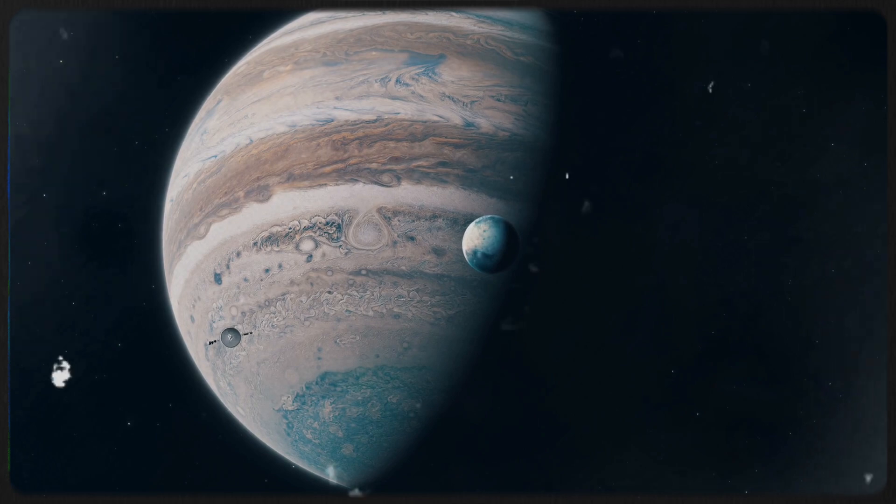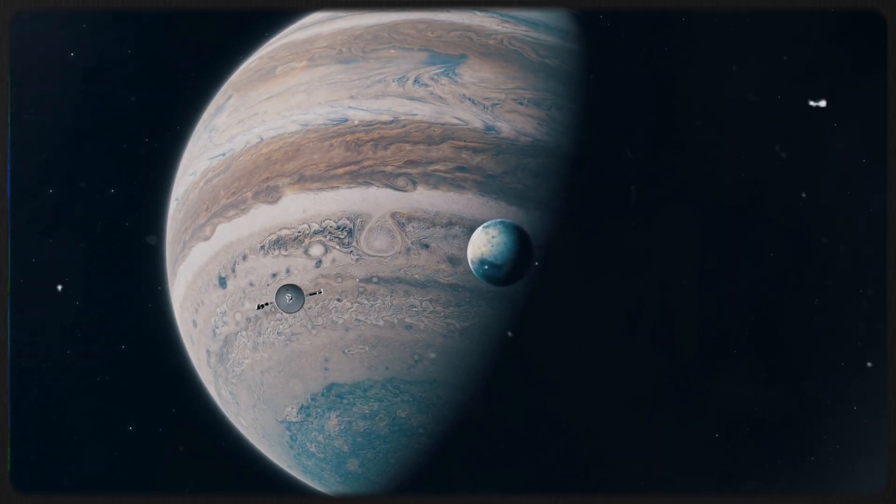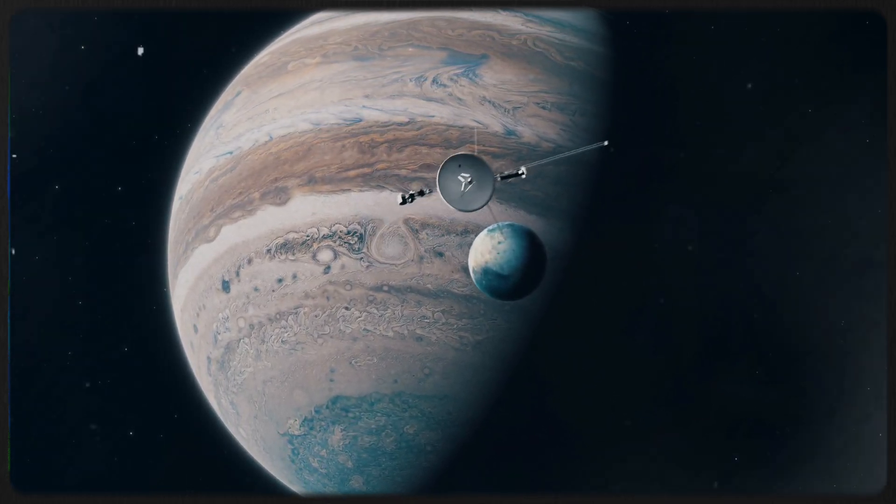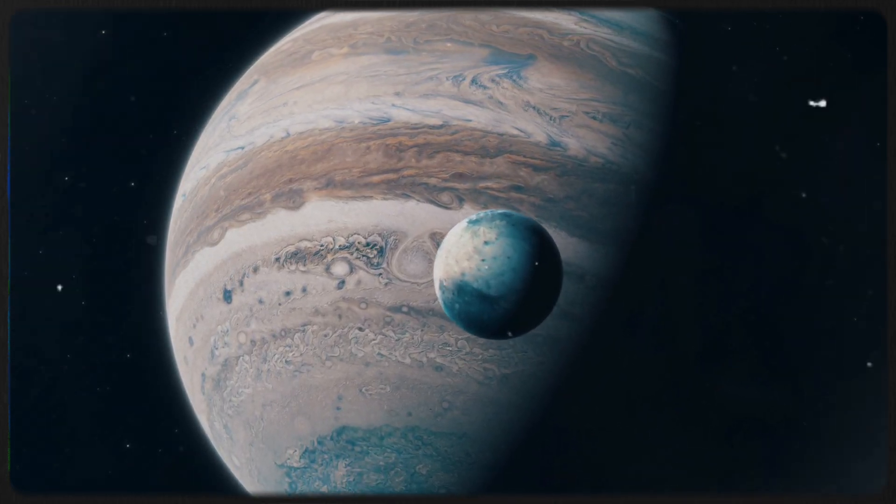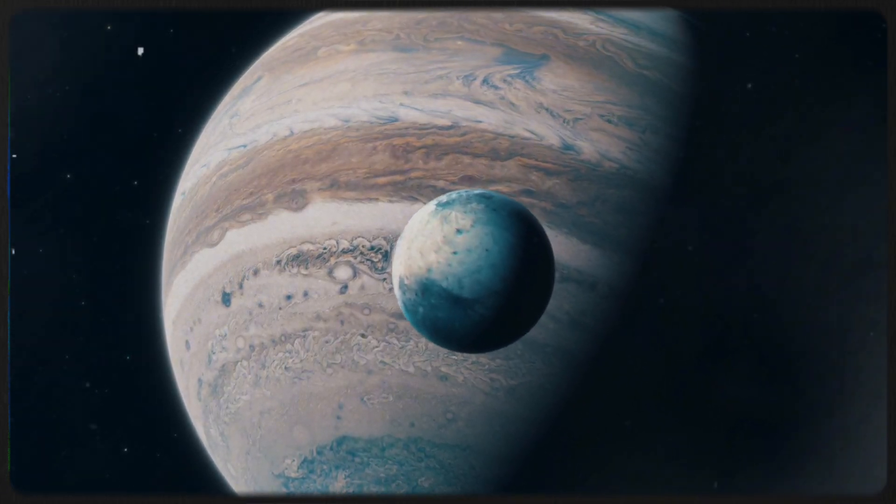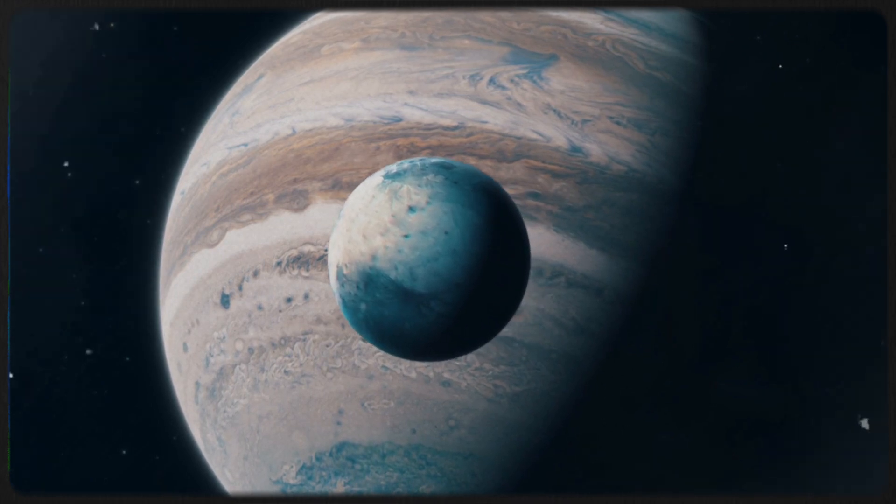As the spacecraft left the Jupiter system, they received a gravity assist, accelerating them by 35,700 miles per hour. This crucial boost enabled them to escape the Sun's gravitational pull and continue their journey toward other stars.